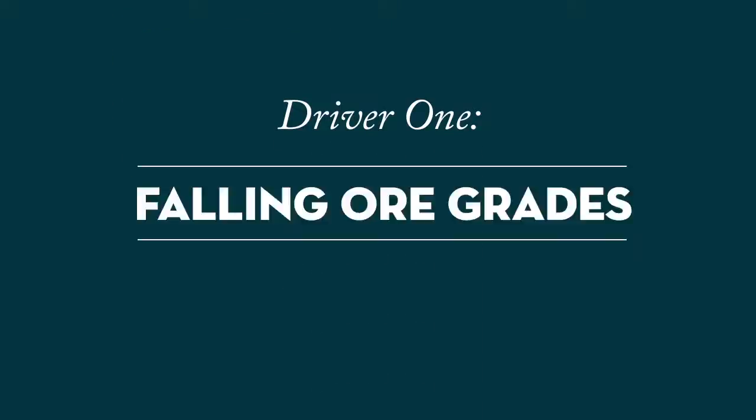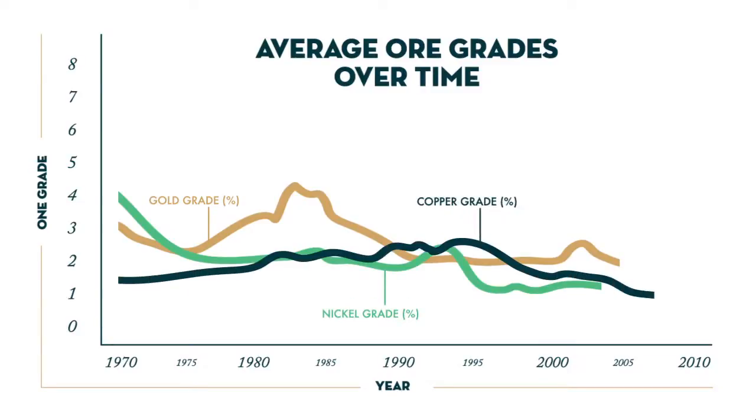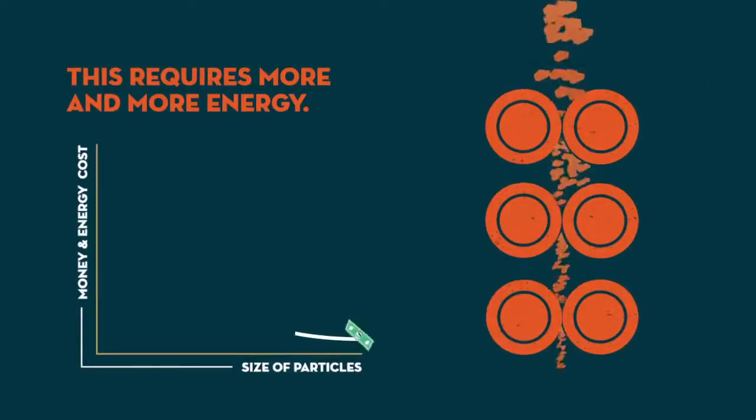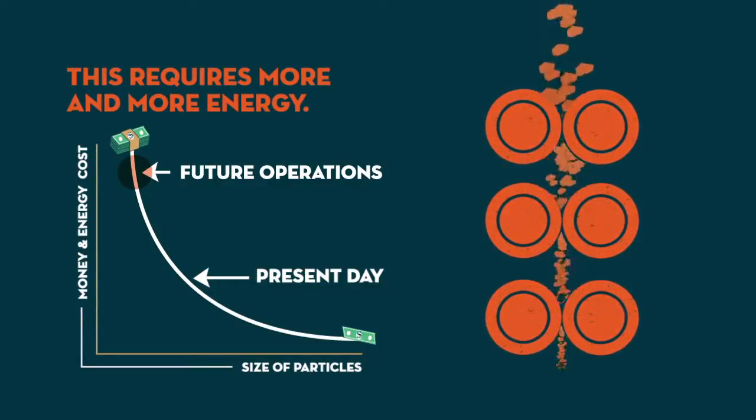The first key driver: falling ore grades. The highest grade ore bodies are being mined and exhausted. As a result, the average grade of ore bodies is falling, resulting in increased comminution and higher costs. When the target minerals comprise lower volumes of the mined ore, the ore must be crushed to smaller particles.